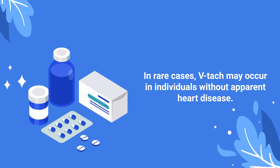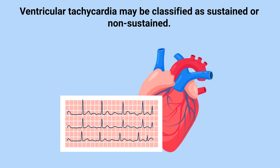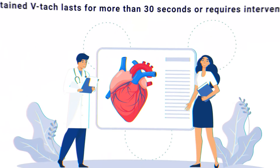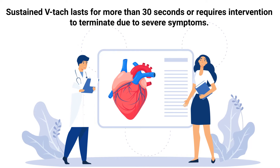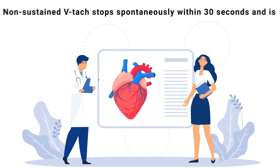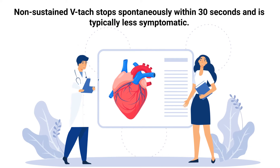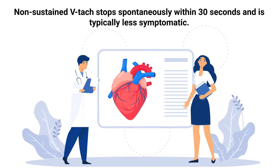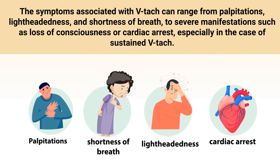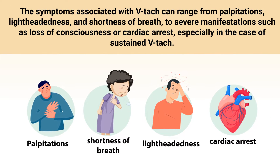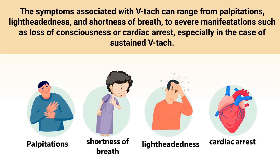Ventricular tachycardia may be classified as sustained or non-sustained. Sustained VT lasts for more than 30 seconds or requires intervention to terminate due to severe symptoms. Non-sustained VT, on the other hand, stops spontaneously within 30 seconds and is typically less symptomatic.